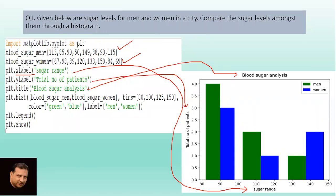plt.hist - histogram create. Blood sugar men, blood sugar women, bins - we have taken 80, 100, 125, 150, which histogram automatically distributes: 80, 90, 100, 120 like that. Color green, blue. Label compulsory - label equals men, women. plt.legend() - with this your legend is created. This is your legend. Green color is for men, blue color is for women.